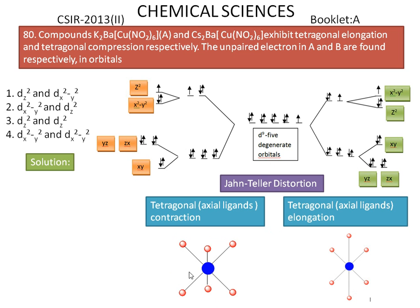From the overall conclusion: in tetragonal elongation, the unpaired electron is present in dx²-y²; in tetragonal compression or contraction, the unpaired electron is present in dz². So the correct answer is dx²-y² and dz².